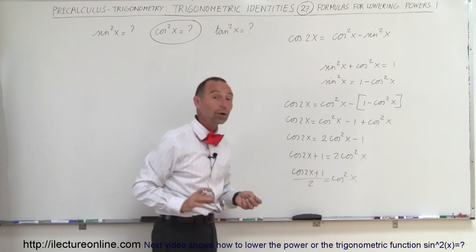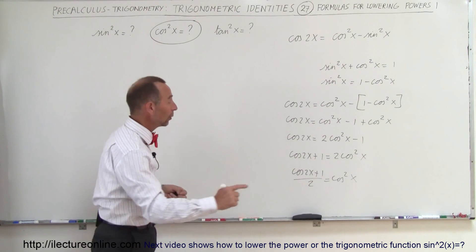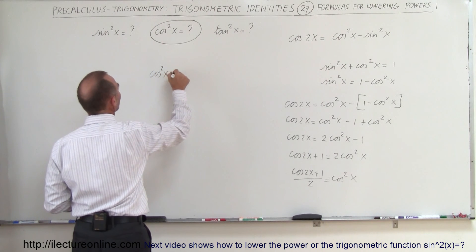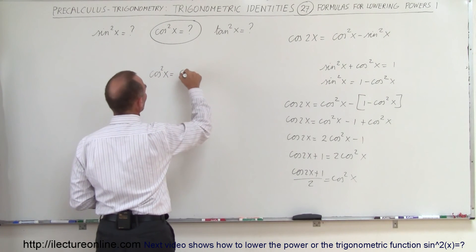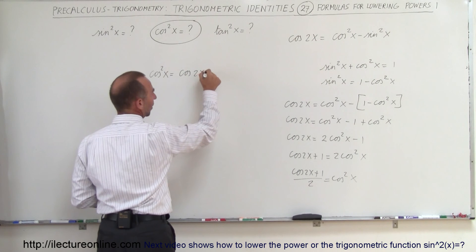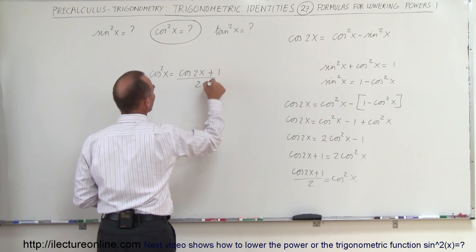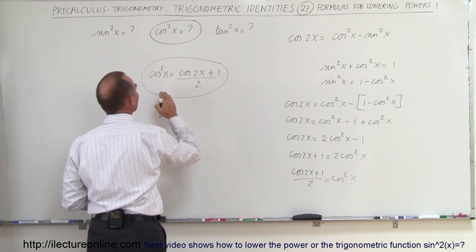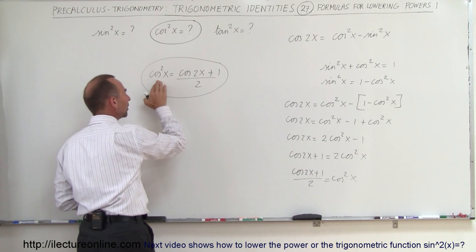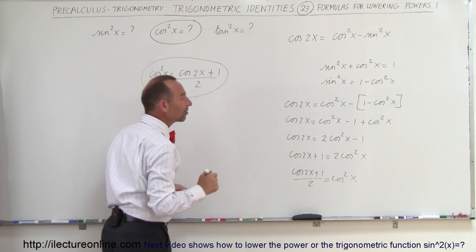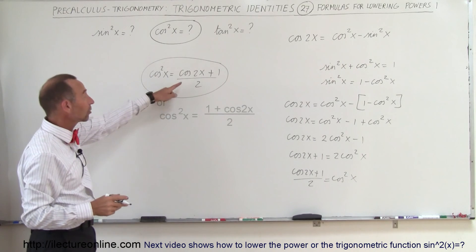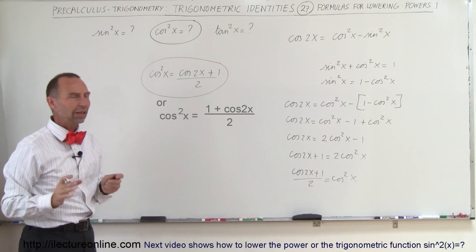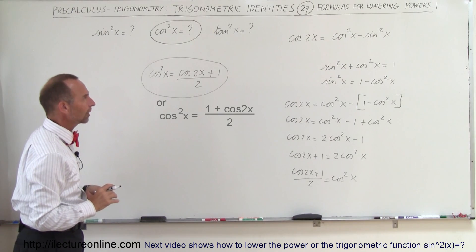That becomes our equivalency. We can state that cosine squared of x can be written as the cosine of 2x plus 1, divided by 2. There we have a nice formula that reduces cosine squared of x into cosine of single powers. We still have a double angle expression, but we no longer have the cosine squared. That's how we do it for the cosine.